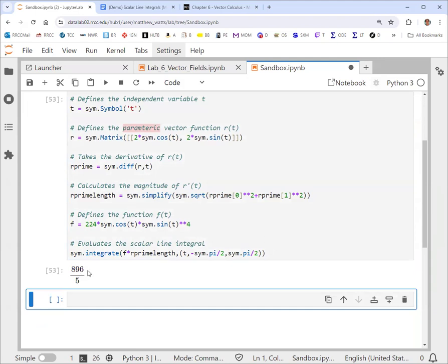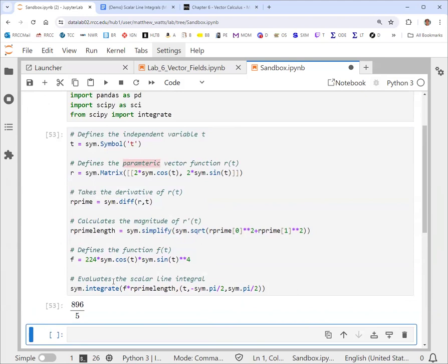So that is 179.2 with a fraction form we found, 896 over 5. So that's another way you could validate. Just be sure to show that code and result if that's what you're doing.